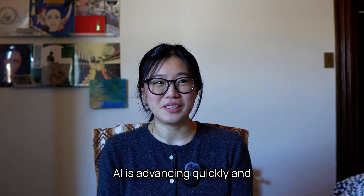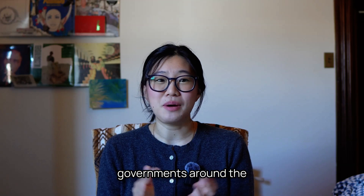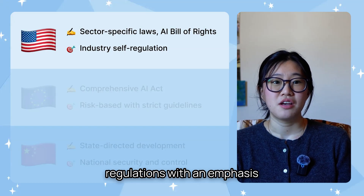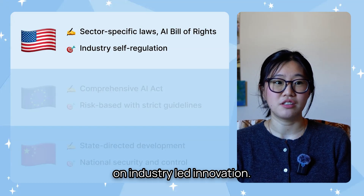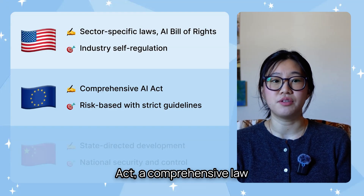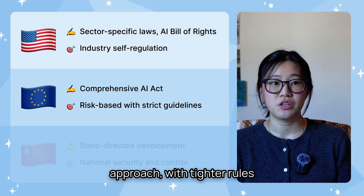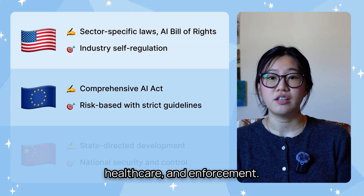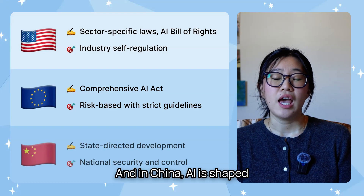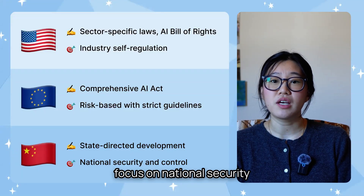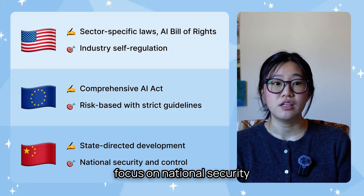AI is advancing quickly and governments around the world are trying to keep up. The United States mostly uses sector-specific regulations with an emphasis on industry-led innovation. The EU just passed the AI Act, a comprehensive law that takes a risk-based approach with tighter rules for AI used in education, healthcare, and enforcement. And in China, AI is shaped by centralized, state-led development with a focus on national security and social control.